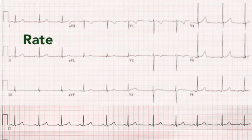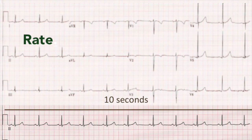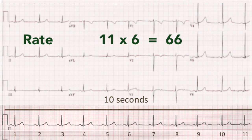If the waves are irregularly spaced, then another method works better. Here we measure a certain amount of time — rhythm strips often last 10 seconds — we count the number of R peaks in that time, and multiply up to one minute.